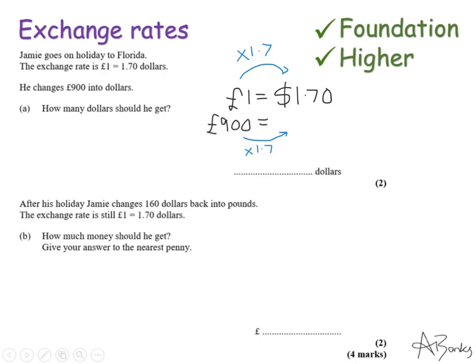So £900 times by 1.7 and again this is why it's a calculator question. If I type that in my calculator I get $1530. So that's my answer, 1530 dollars.